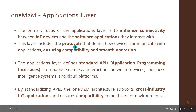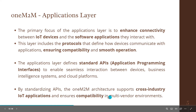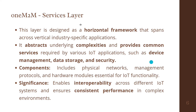The application layer of One M2M architecture ensures connectivity by defining standard APIs for both client and computer applications. The Services layer provides common services such as Device Management, Data Storage, and Security. These common services ensure consistent performance across complex environments and enable interoperability of IoT systems.